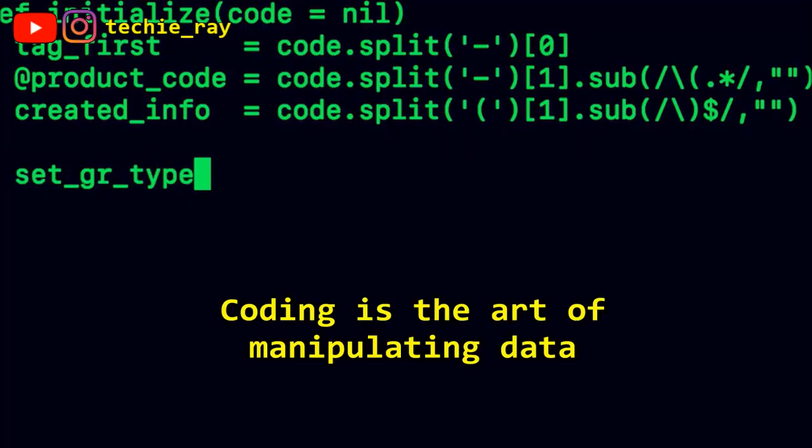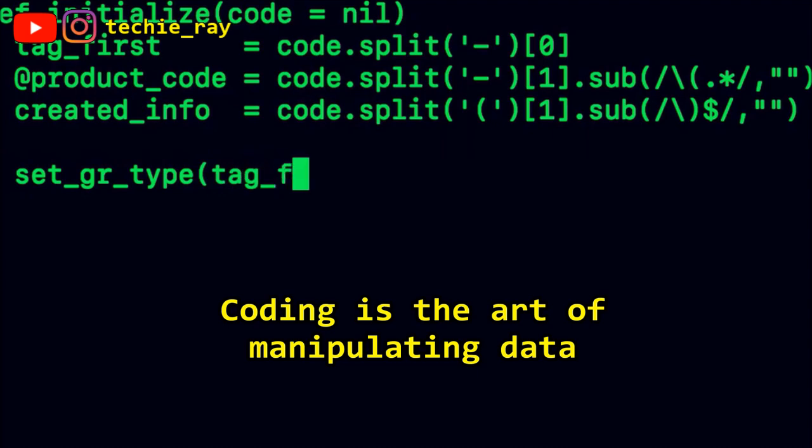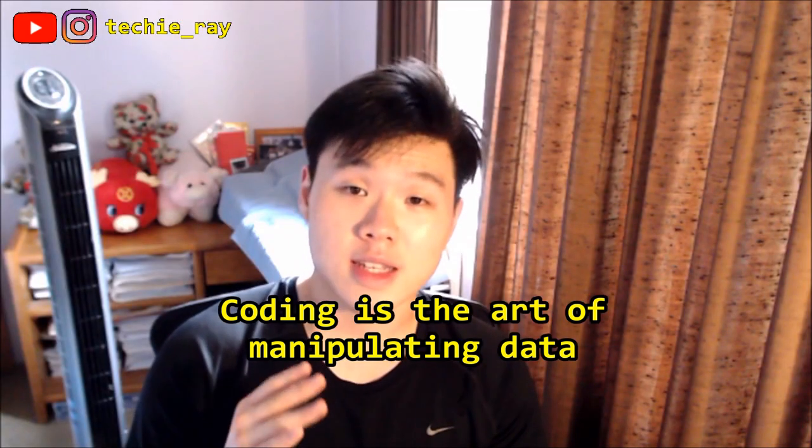Ultimately, coding is the art of manipulating data. If you can represent something in the world as numbers or strings, you can basically codify that thing.